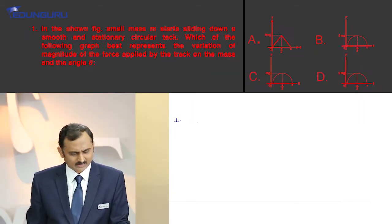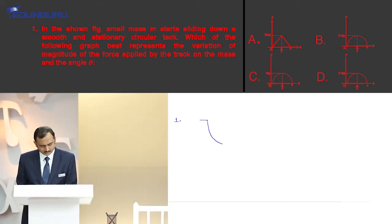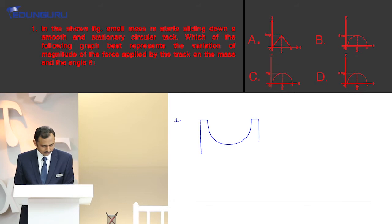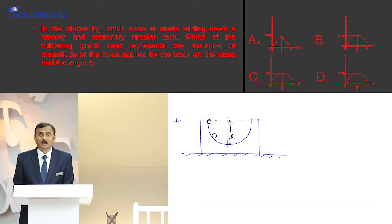By looking at the diagram you can say that if this is the circular track, this is the ball, this sphere is rolling down by height r.